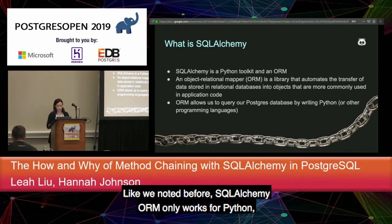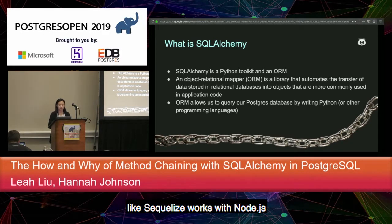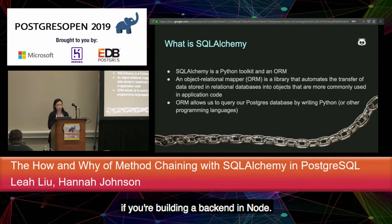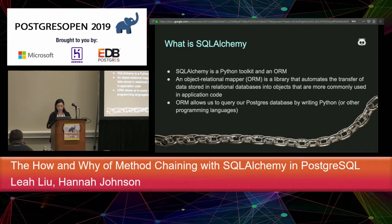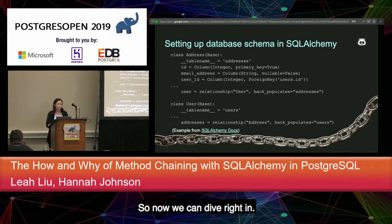ORMs provide a high-level abstraction upon the relational database, allowing developers to write Python code — for SQLAlchemy at least — instead of SQL for normal operations like create, update, or delete. Developers can use the programming language they're most comfortable with rather than learning or writing SQL statements. SQLAlchemy ORM only works for Python, but other ORMs exist, like Sequelize, which works with Node.js.